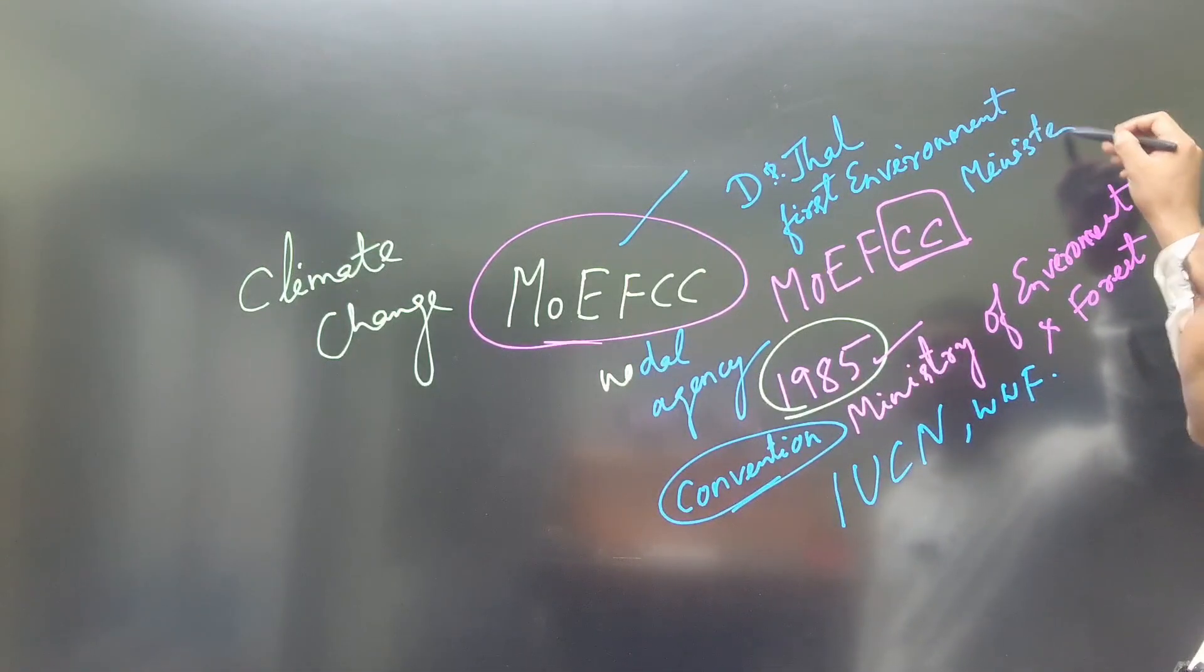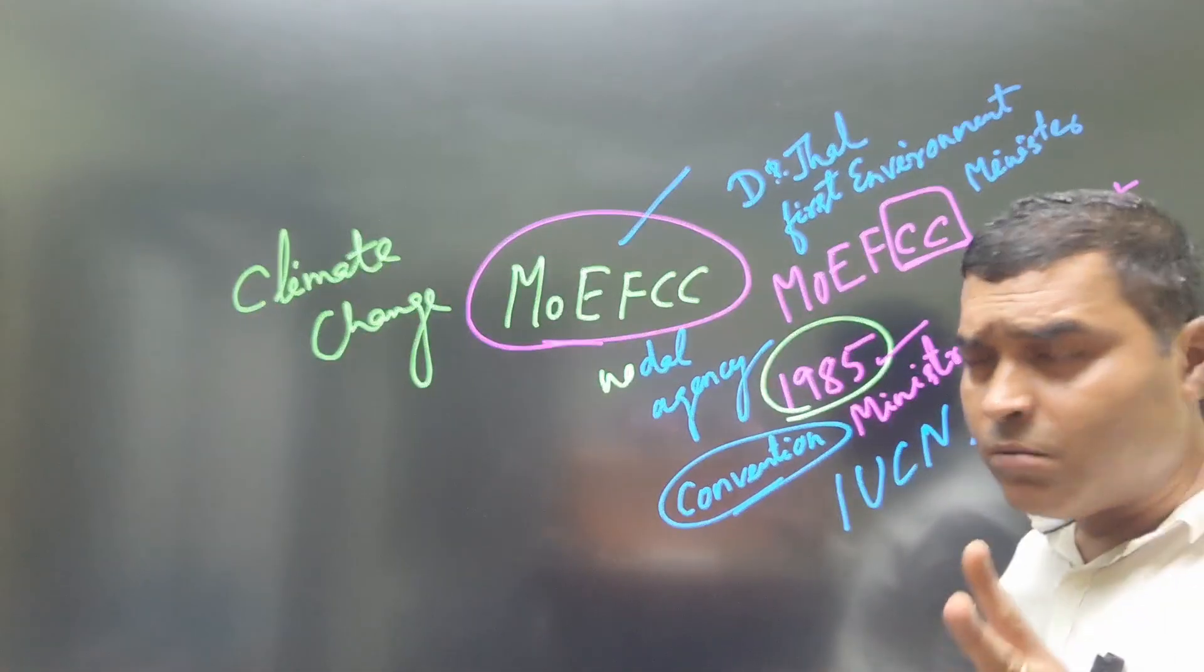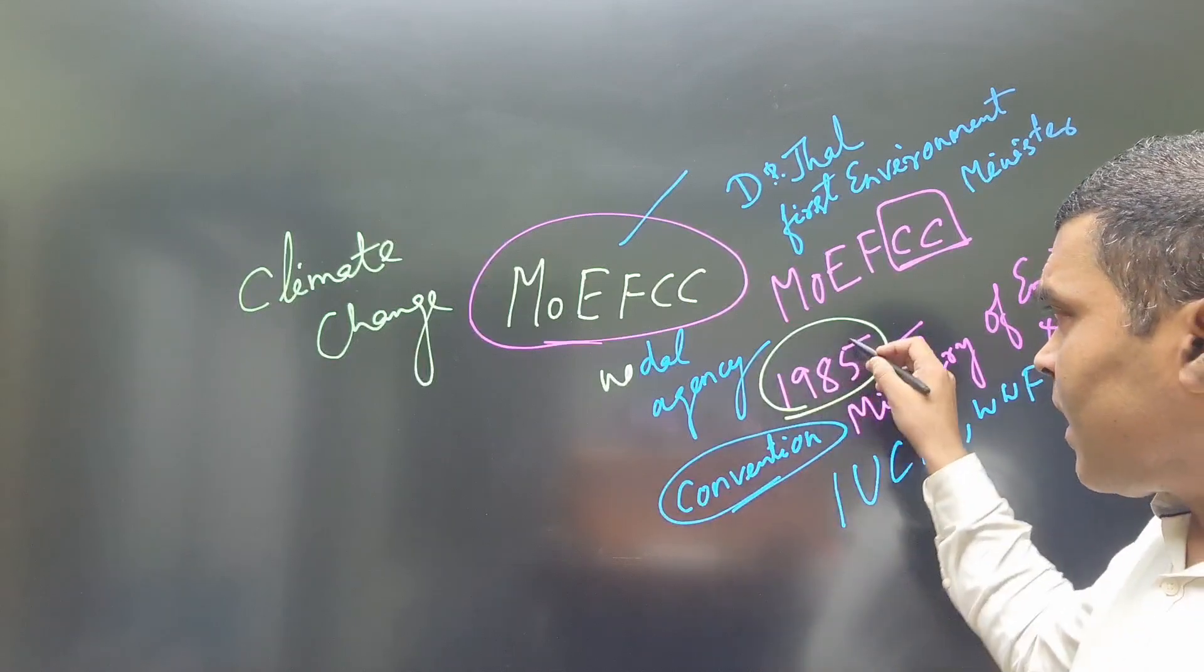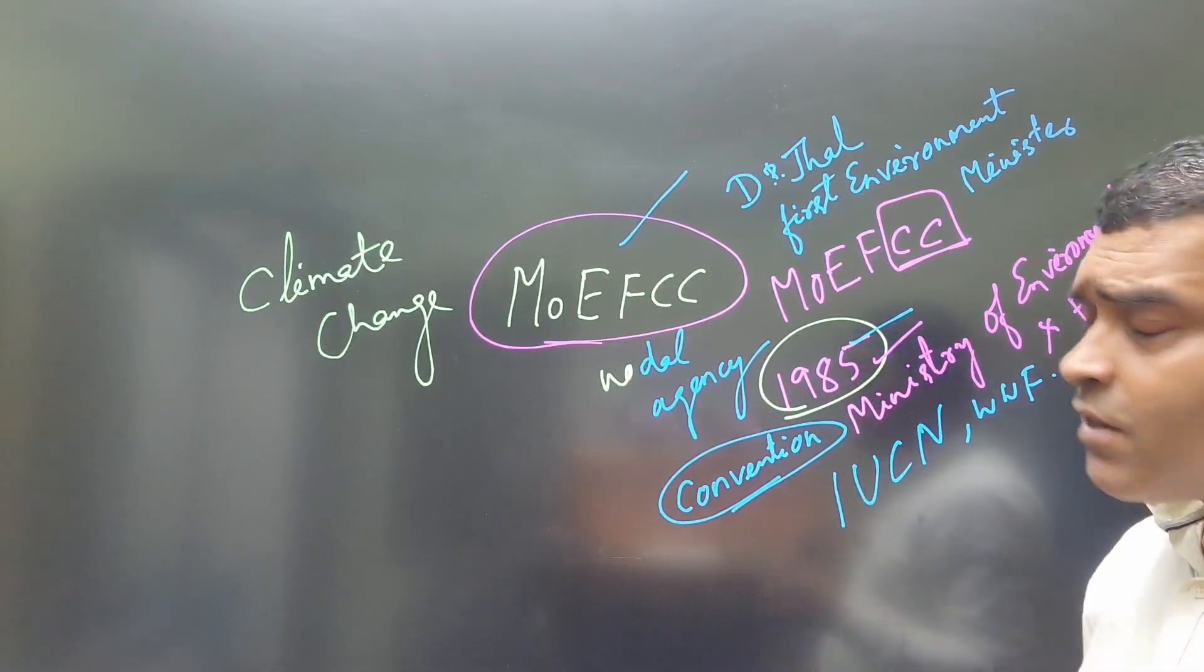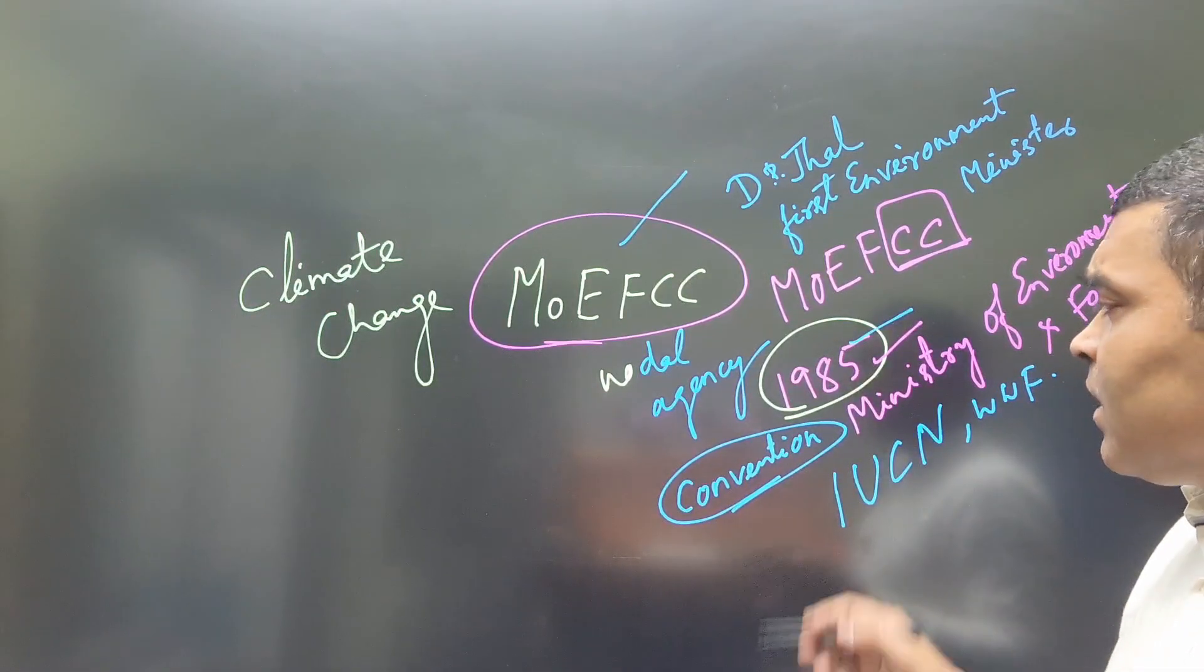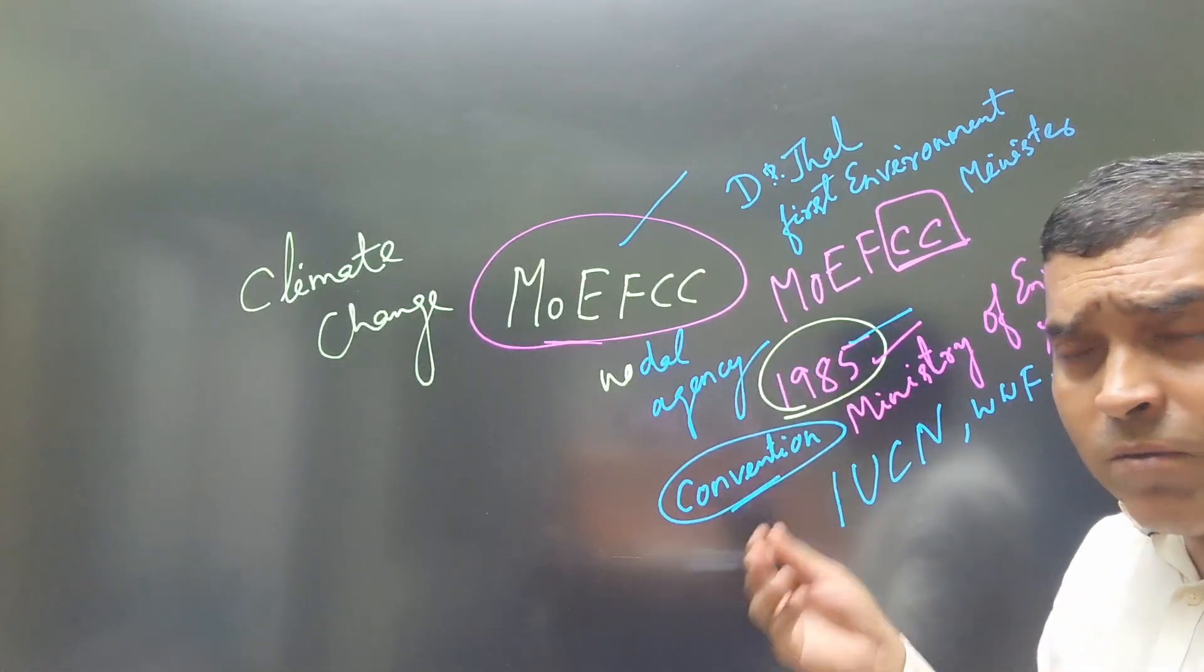The third thing, most important, is the first environment minister. The third thing is the international treaty and convention regarding the environment.